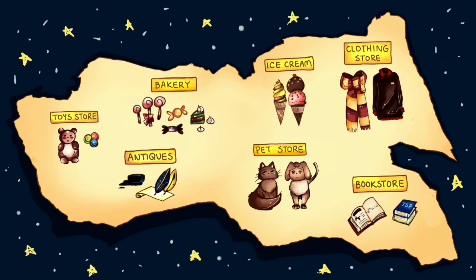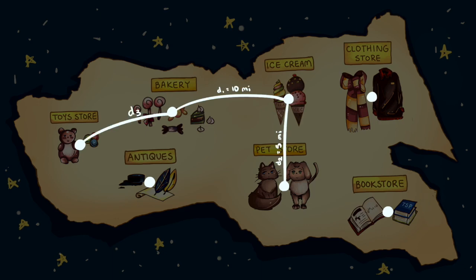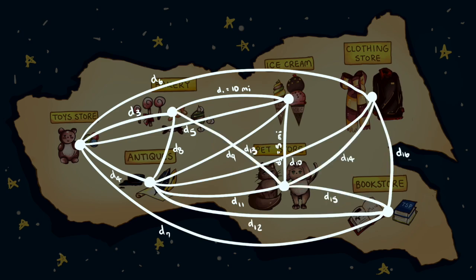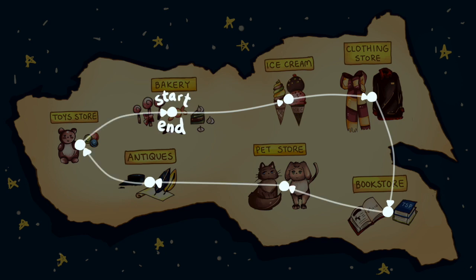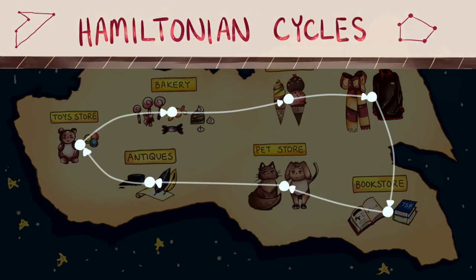Imagine that you're on a shopping trip where you need to visit 8 shops. There's a path between any two shops, but the distance varies depending on the shops. You need to start and end at the same shop and visit all of the shops exactly once. This is called a Hamiltonian cycle.